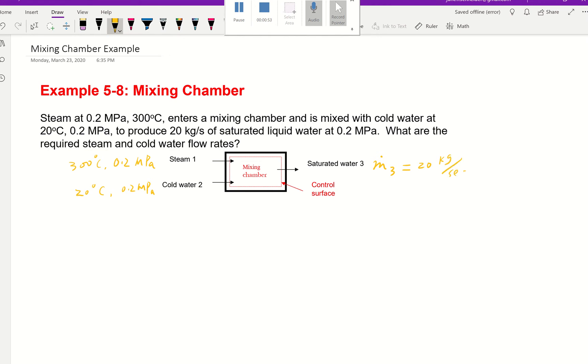It's saturated liquid and the pressure is 0.2 MPa. We're asked to find the required steam and cold water flow rates. So they want us to find ṁ₁, the mass flow rate of the steam, and the mass flow rate for the cold water. By looking at this example, you know it's a mixing chamber, so we immediately go to our mass and energy conservation equations.